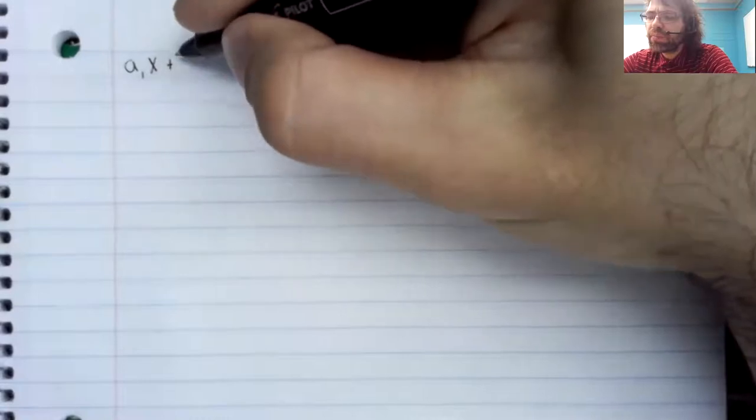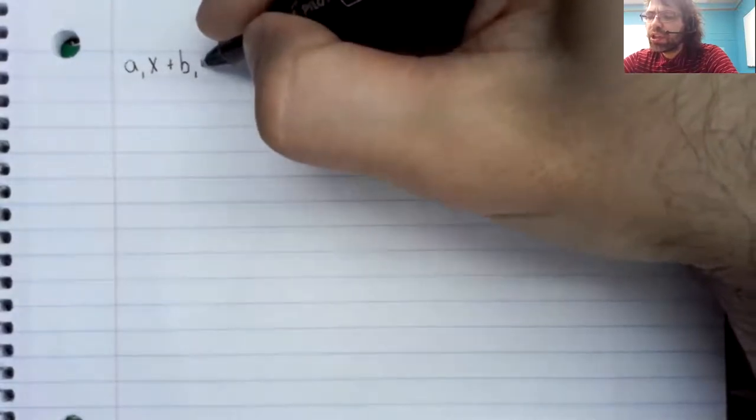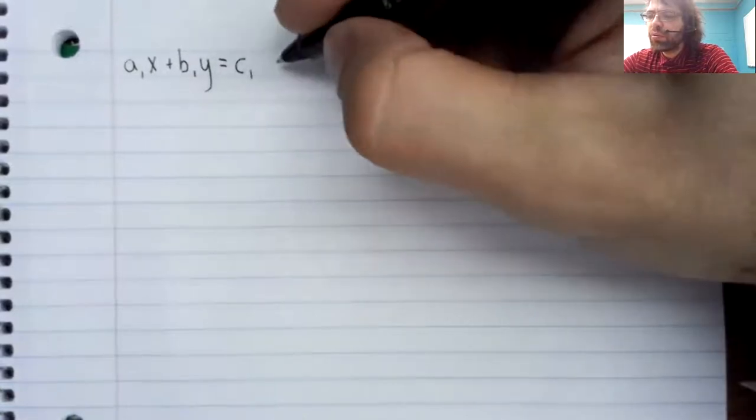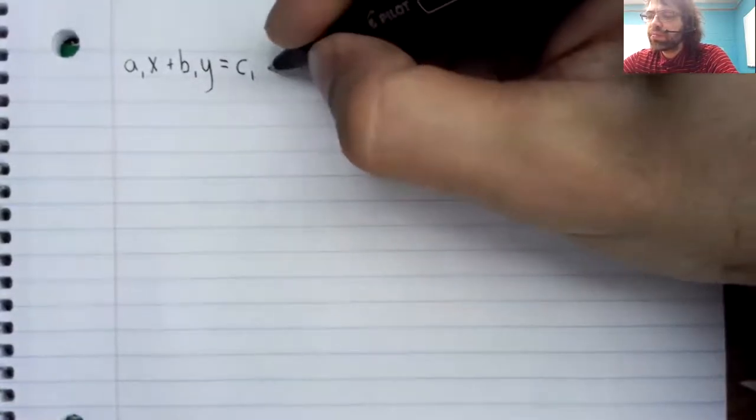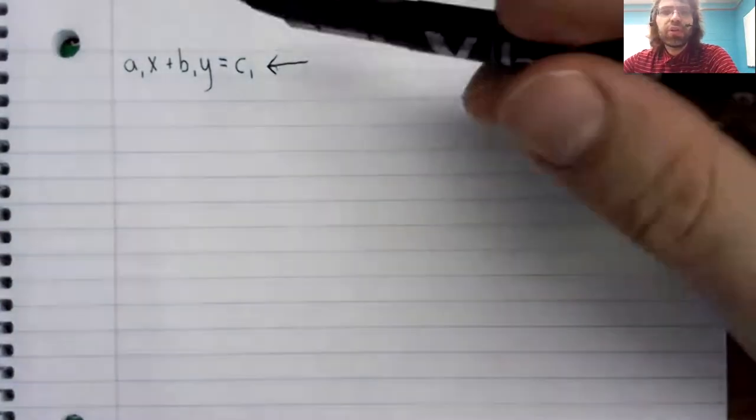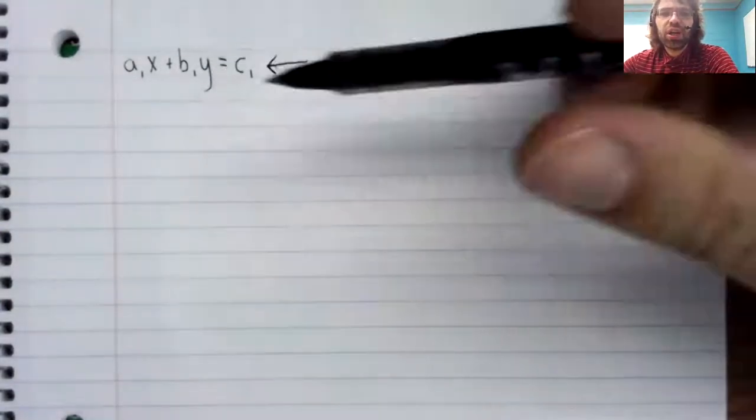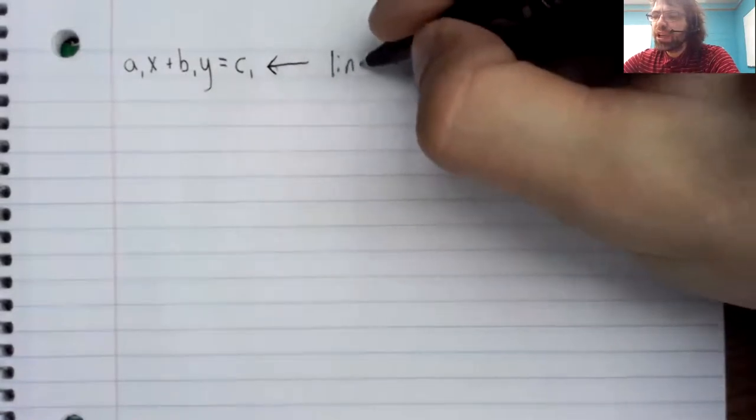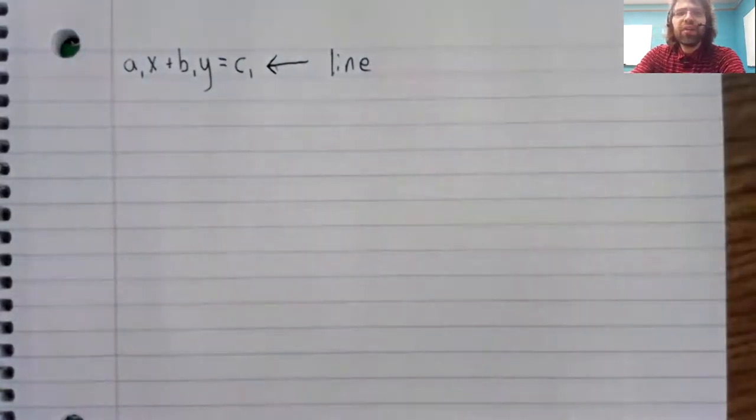So the key point in our investigation is that if you have a linear equation with two variables, you can graph this in the Cartesian plane. And when you graph it, you just get a straight line.